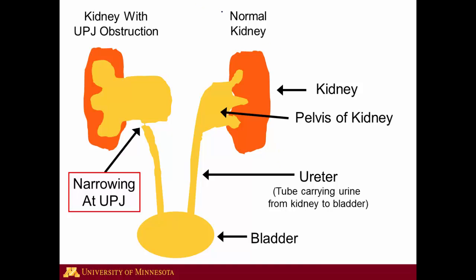You can see that here on the right side — the normal kidney. First you have the normal parenchyma of the kidney, seen here in orange. This is the part of the kidney that makes urine, and when the urine is made, it comes down into the collecting system, which is shown here in the pelvis of the kidney, and then it goes down the ureter to the bladder.